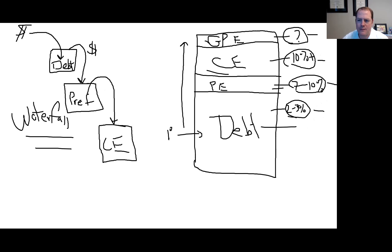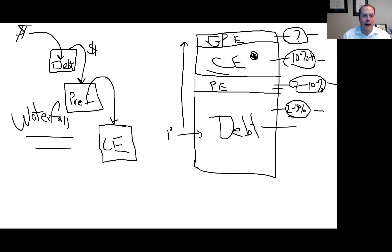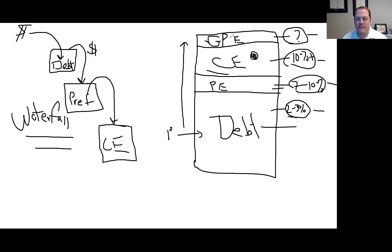Somebody's asking about the typical range for a GP. The way we structure our deals, we actually invest alongside our investors in the common equity piece. Technically, the GP shares percentage return is hard to calculate because the GP is not putting any money up for that GP percentage. Most people will still do so — I encourage you to only invest with groups that do put money into the deal. Our group is between about five to ten percent of the initial equity, going in as common equity shares alongside our investors.